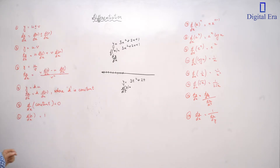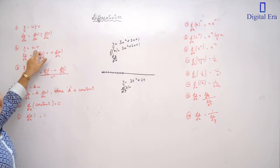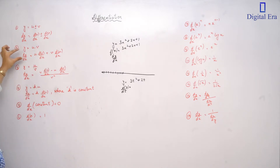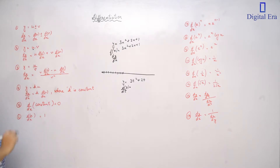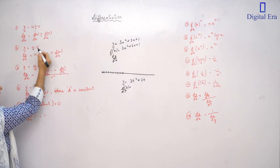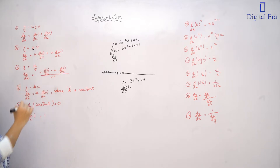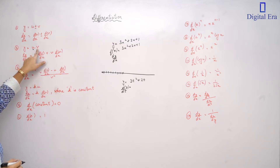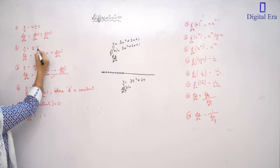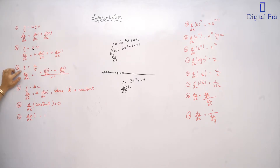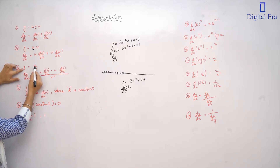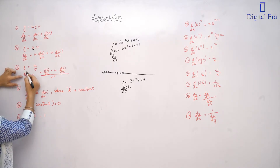Next is multiplication. y is equal to u times v — this dot means multiplication. When we take the derivative of this function, we get: first function as it is, multiplied by the derivative of the second function, that is dv/dx, plus the second function as it is multiplied by the derivative of the first function, that is du/dx. This is the product rule.